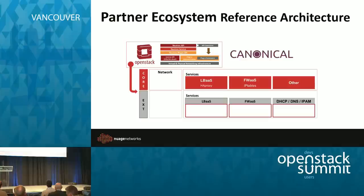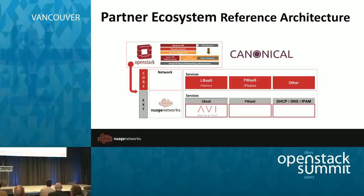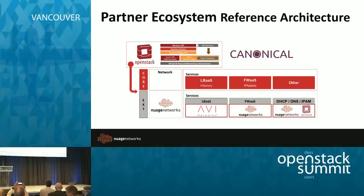We've also worked with Canonical — that's the second reference architecture — using the Canonical OpenStack distribution. We inject Nuage Networks as the extension for networking and work with Avi Networks for a distributed Load Balancer as a Service. Avi is a startup in Sunnyvale, California that distributes the load balancer on a per-hypervisor basis — a very clever solution. For Firewall as a Service and extensions like DHCP and DNS, it's a combination of Nuage Networks and native OpenStack capability.